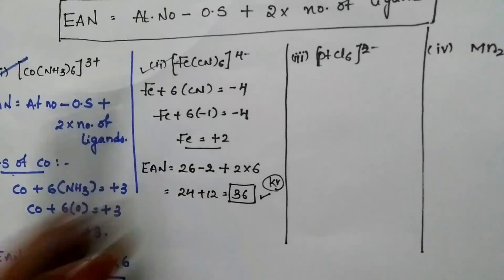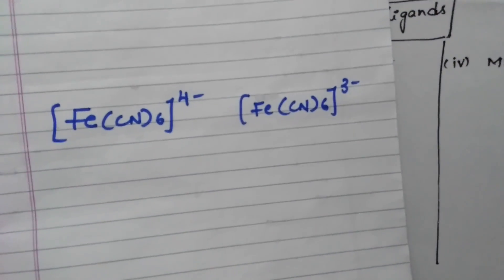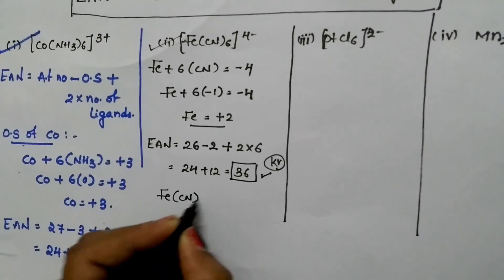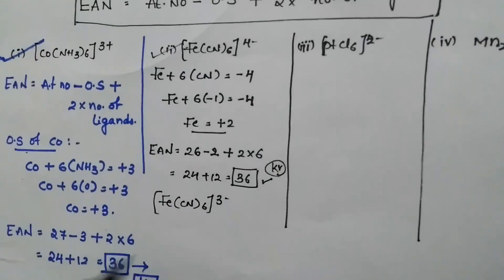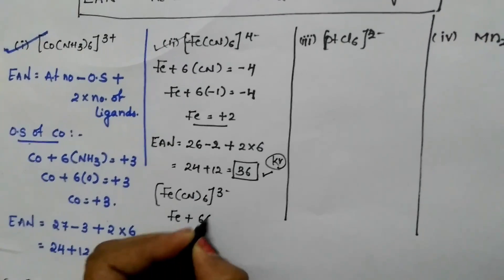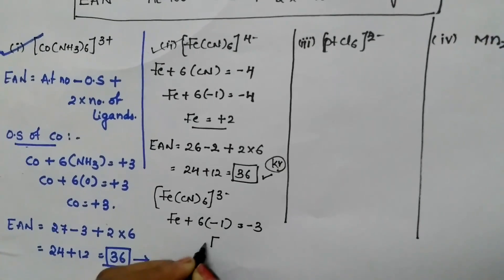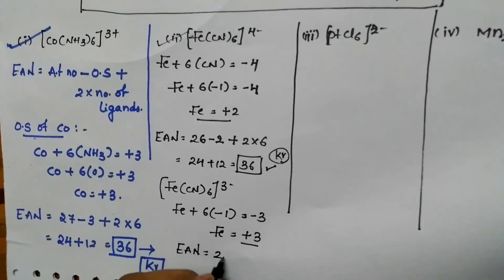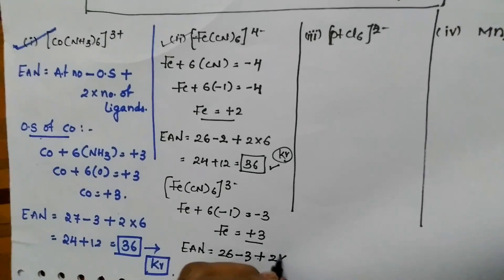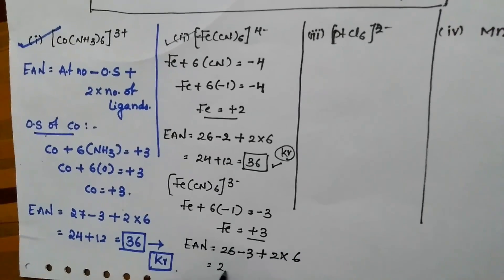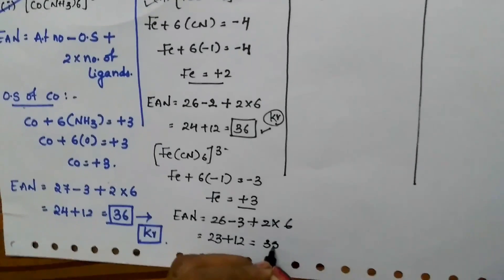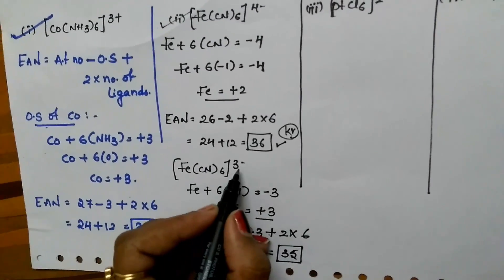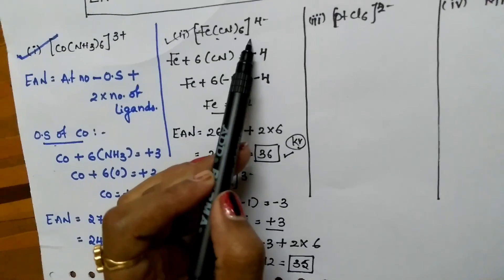Now for our main question: Fe(CN)6⁴⁻ and Fe(CN)6³⁻ — which is most stable? Let us find the EAN for Fe(CN)6³⁻. Fe + 6×(−1) = −3, so iron's oxidation state is +3. EAN = 26 − 3 + 2×6 = 23 + 12 = 35, which is not the atomic number of any noble gas. So Fe(CN)6³⁻ is less stable compared to Fe(CN)6⁴⁻.